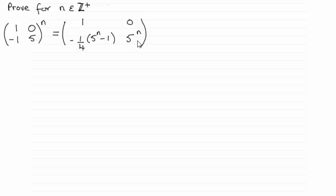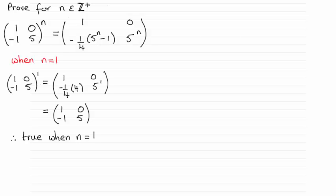If not, do check out my videos on my website. Now we need to show that this is true for when n equals 1 first of all. Just substitute n equals 1 in the left hand side and n equals 1 in the right hand side and check that you get exactly the same value. You should find that they both check out to the matrix [1, 0; -1, 5], and so therefore it's true when n equals 1.